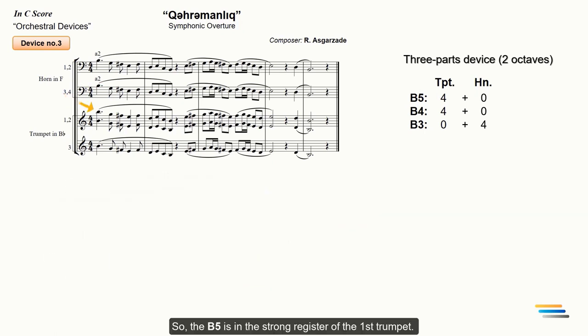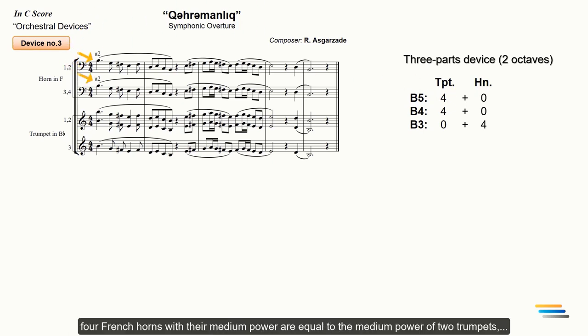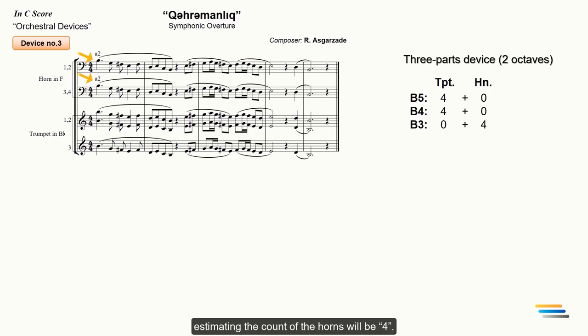So, the B5 is in the strong register of the first trumpet. This register has been marked with four. The B4 is played by two trumpets in their medium power. Both trumpets are roughly equal to the first trumpet. Considering that four French horns with their medium power are equal to the medium power of two trumpets, estimating the count of the horns will be four. Thus, we get a roughly balanced device due to the doubled instruments. All registers will sound clear and powerful.